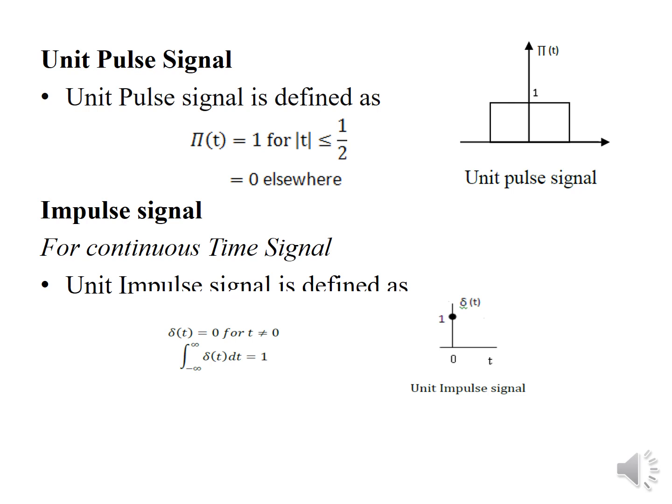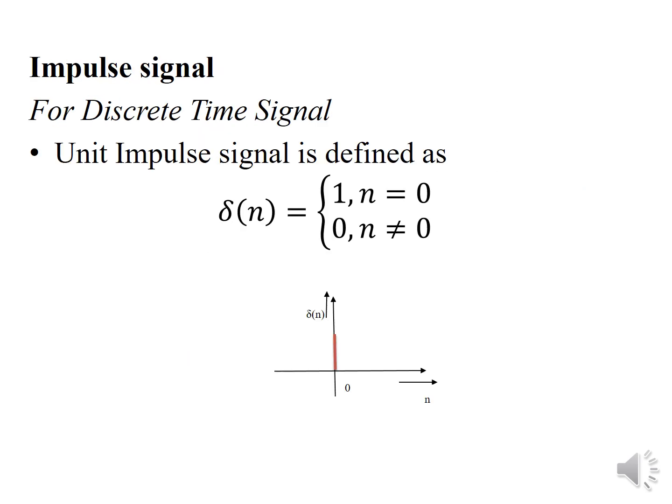Unit pulse signal: the unit pulse signal is defined as u(t) = 1 for |t| ≤ 1/2 and 0 otherwise. Impulse signal: for continuous time, the impulse signal is defined as δ(t) = 0 for t ≠ 0, and the integral from minus infinity to infinity of δ(t) dt = 1. For discrete time, the unit impulse signal is given as δ(n) = 1 for n = 0 and 0 for n ≠ 0, and this is the representation for discrete time signals.